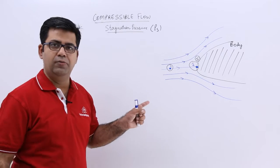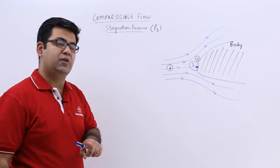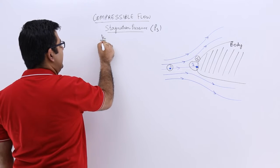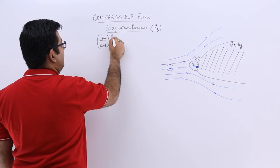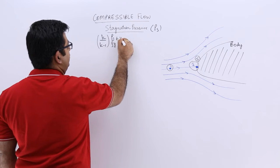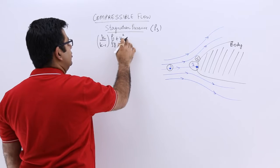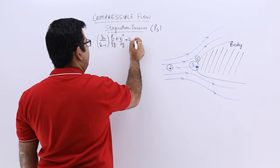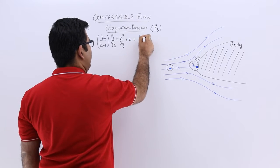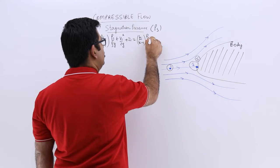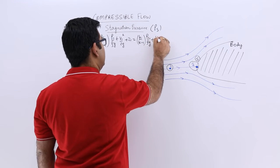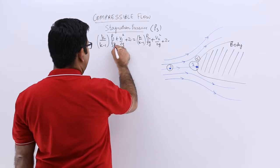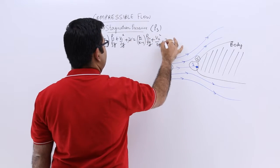Now because we are using a compressible flow, we will apply Bernoulli's equation between these two points for a compressible flow. And that was k upon k minus 1 into p upon ρg plus v1² by 2g plus z1 equals k upon k minus 1 into p2 by ρg plus v2² by 2g plus z2. So I can strike off g and z from both sides.